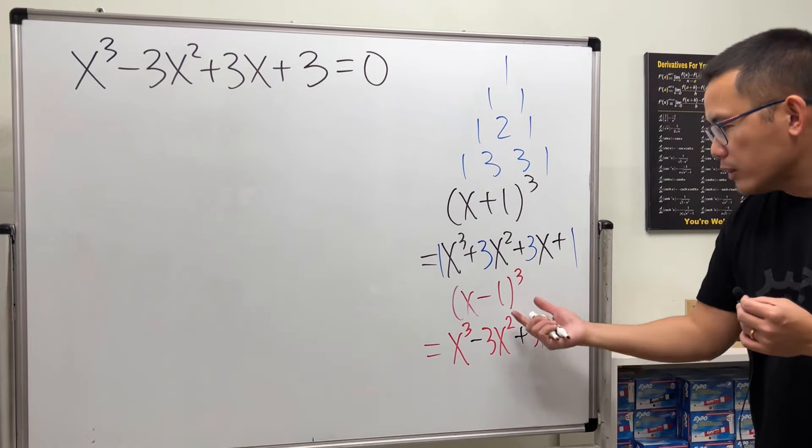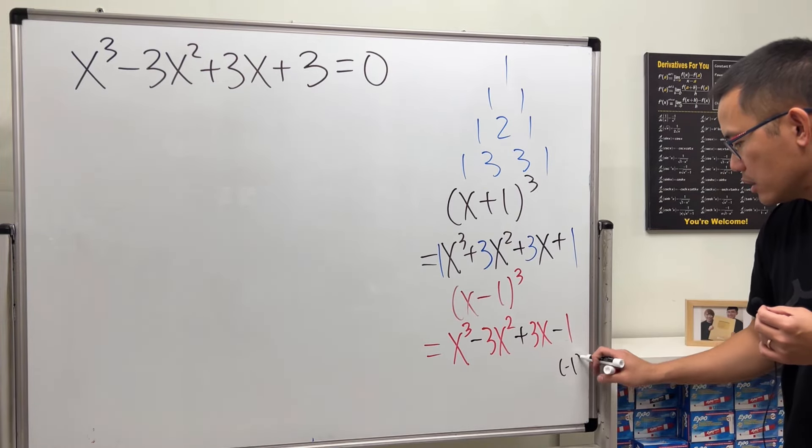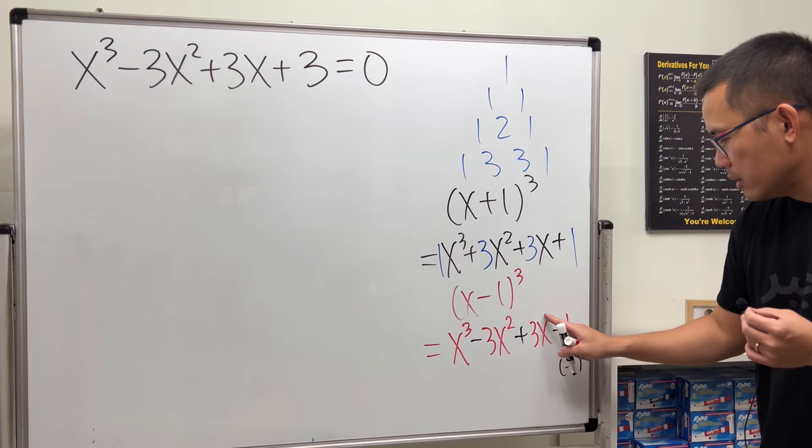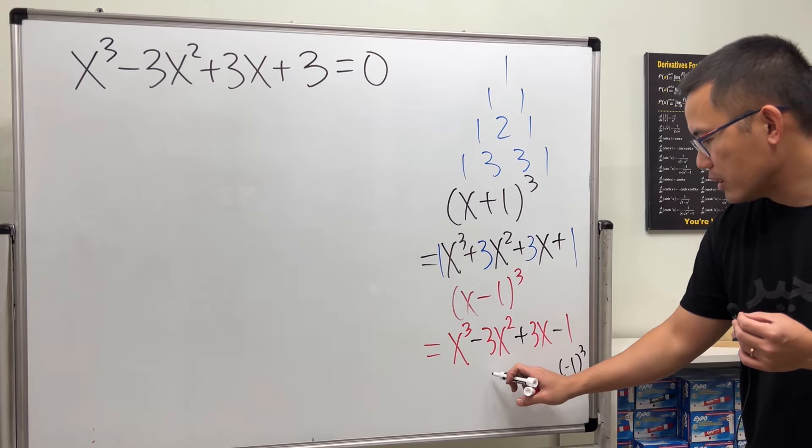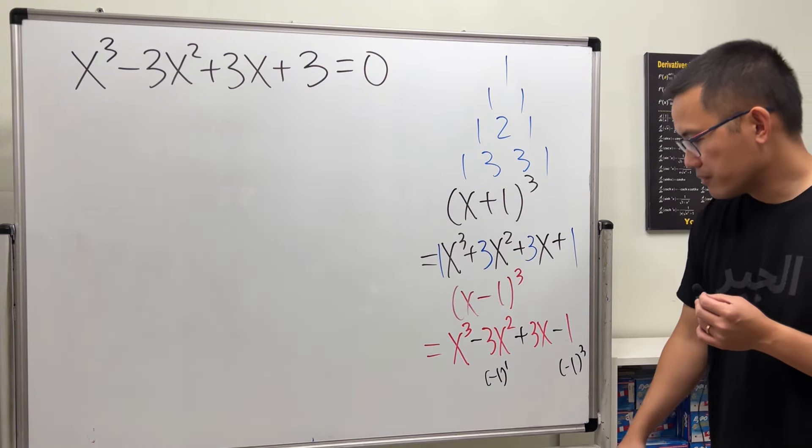The sign alternates because you can look at the negative 1³ at the end, negative 1² which is positive, and then negative 1 to the first power, which will give you negative.